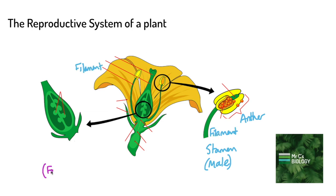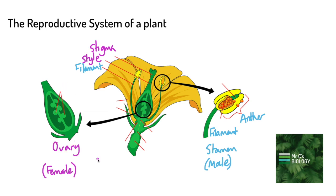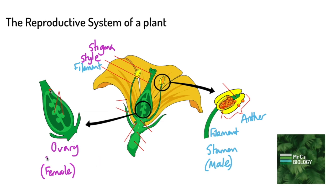The female part is made of a few different things. We have the stigma at the top here, and the bottom of the stigma is called the style. That leads down to the ovary, which is the same name for the female reproductive organ in a human. All of this female part together is called the carpel.